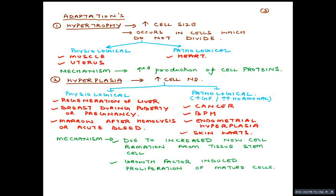Now, adaptations. There are four main kinds. Number one is hypertrophy, which means an increase in cell size only, occurring in cells which do not divide. Hypertrophy can be physiological — occurring in muscles during bodybuilding and in the uterus during pregnancy — or pathological, such as cardiac hypertrophy in hypertensive individuals. The basic mechanism of hypertrophy is increased production of cellular proteins.